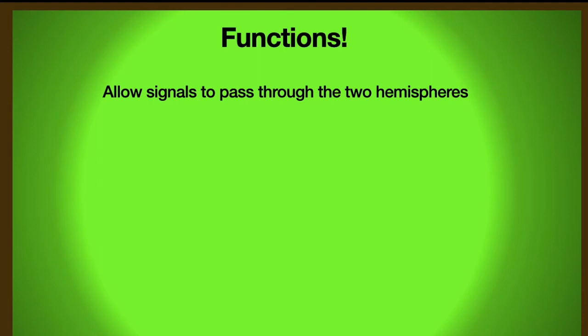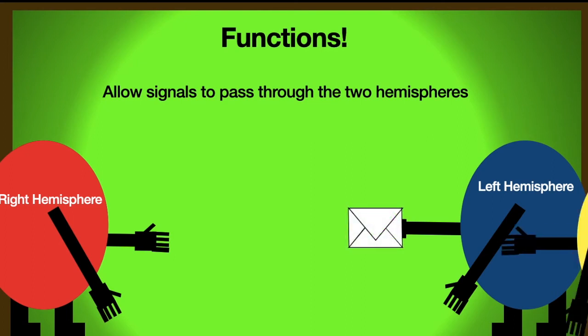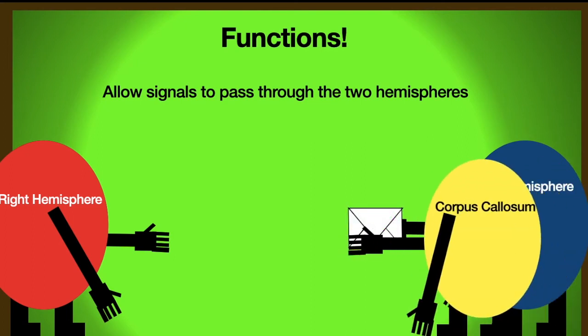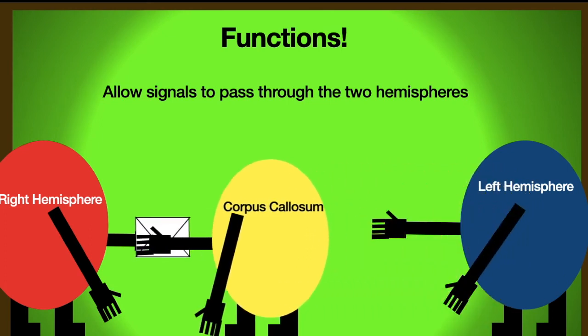The way I like to think about the corpus callosum is: imagine these are the two hemispheres, and one of them is holding a signal it wants to send to the other. The corpus callosum comes, takes the message, and delivers it to the other hemisphere.